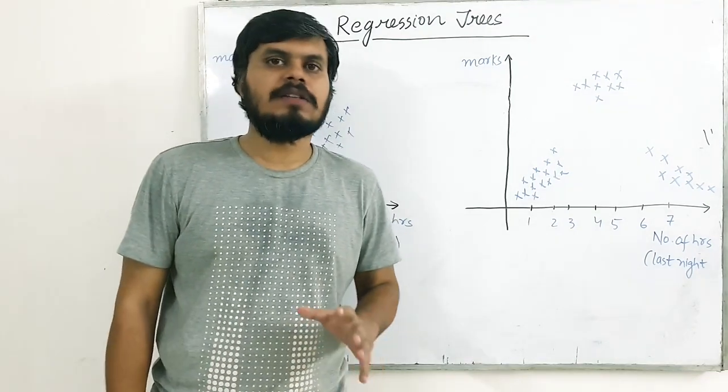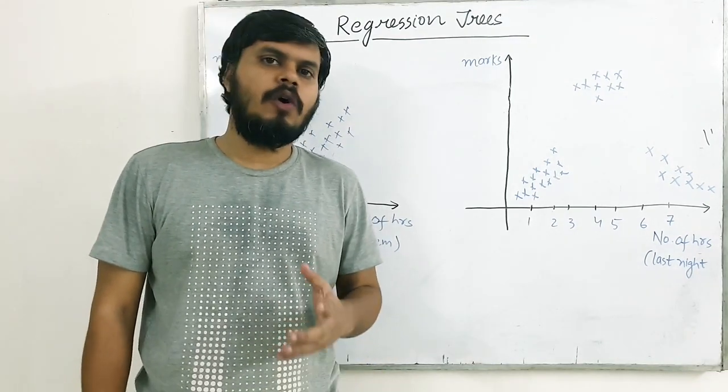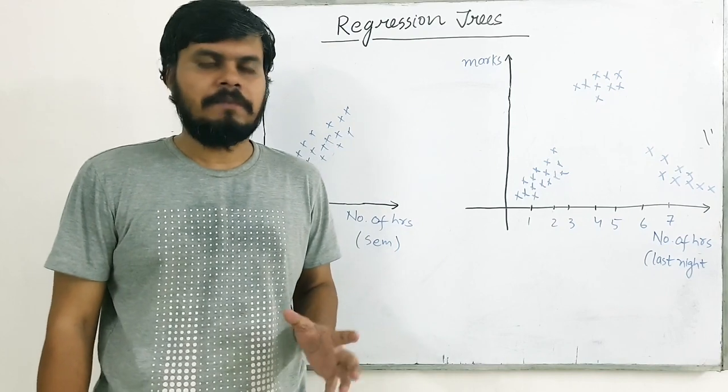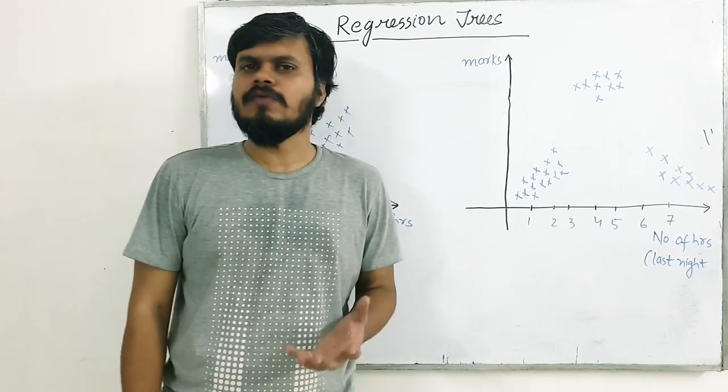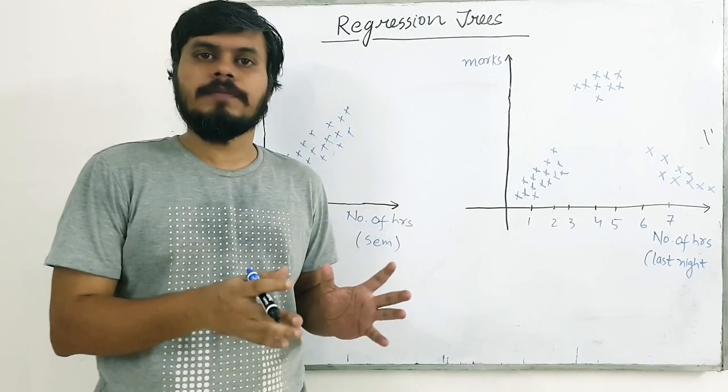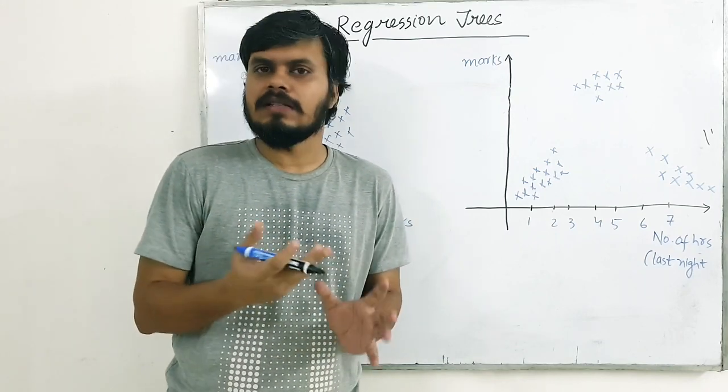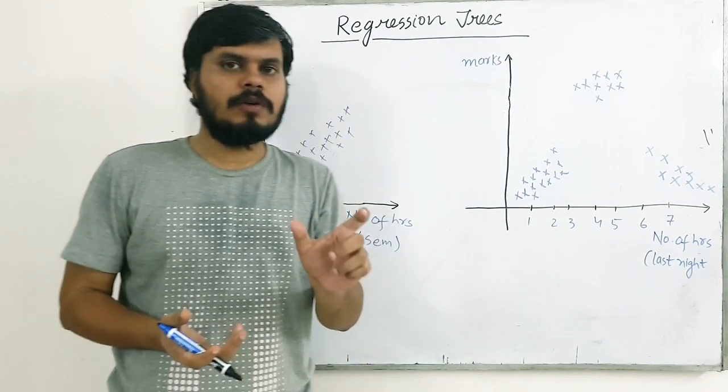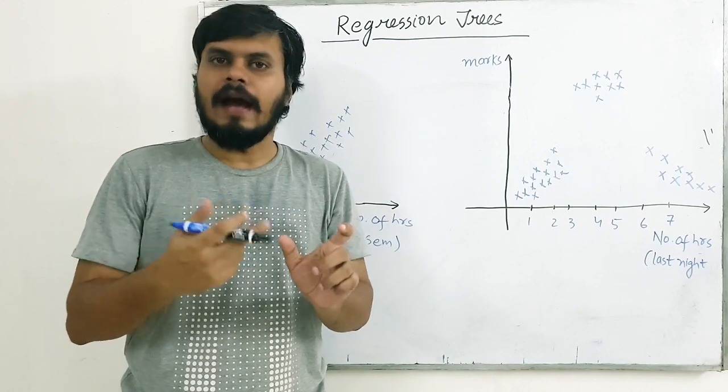Hi guys, so abhi tak hum ne decision tree mein jitna bhi padha, it was all related to classification, right? And in fact decision tree is one such algorithm, jo classification problems mein bahut zyada use hota hai. Matlab, ek aisa problem jahan pe target column jo apna hai, woh categorical hai, okay?